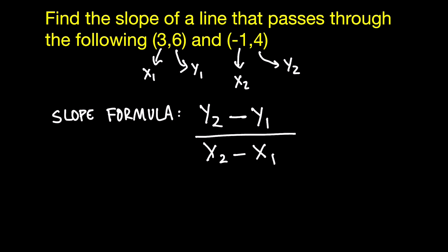If you plug these numbers in, y2 is 4 and y1 was 6, so you would say 4 minus 6 in the top. In the bottom, x2 is minus 1 minus x1 which was 3.